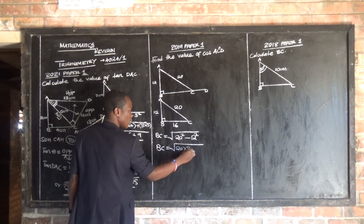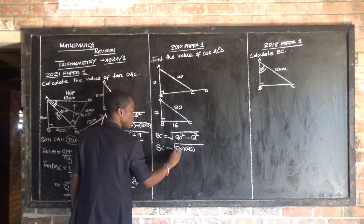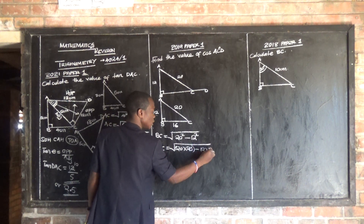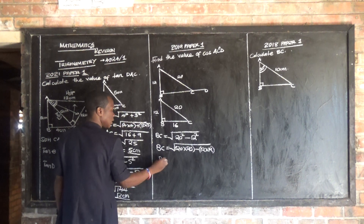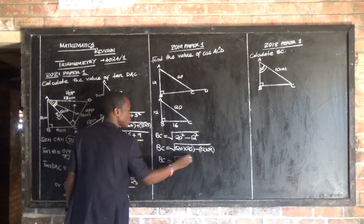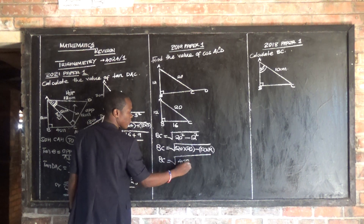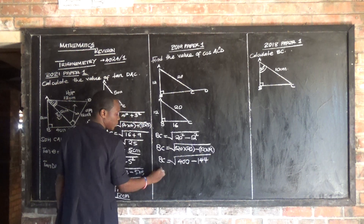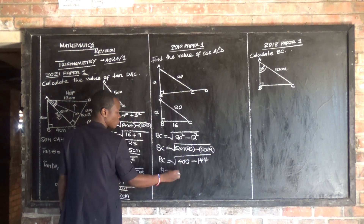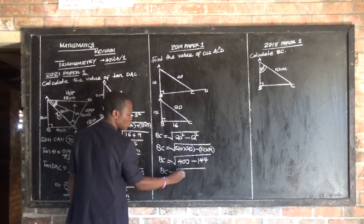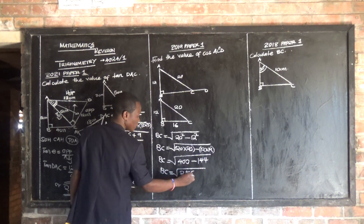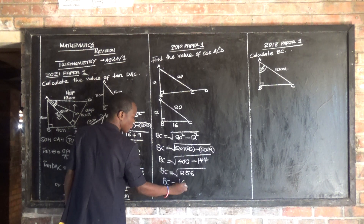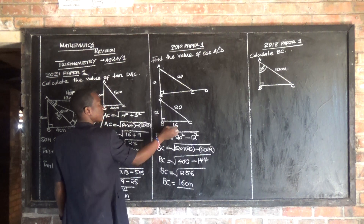20 squared is 20 times 20, which gives 400. Minus 12 times 12, which is 144. So BC equals the square root of 400 minus 144, which gives 256. BC equals the square root of 256, which is 16.